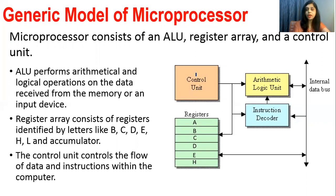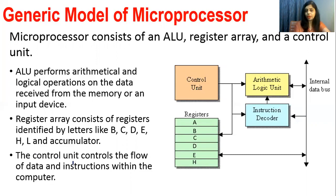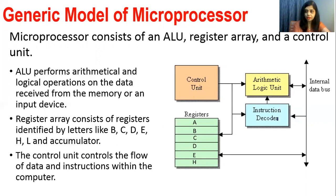A microprocessor also has a control unit, which controls all activities and the flow of data. The control unit controls the flow of data and instructions within the computer. There is also an instruction decoder inside the microprocessor.